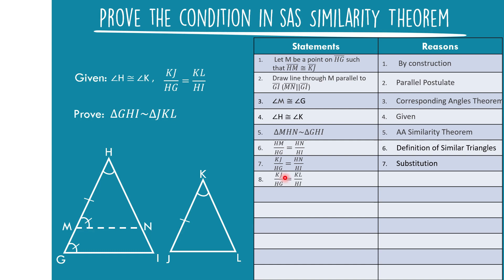Statement eight: KJ over HG is equal to KL over HI, from the given. Statement nine: Using statements seven and eight, HN over HI is equal to KL over HI. Both ratios are equal to KJ over HG, so by the transitive property they are equal.